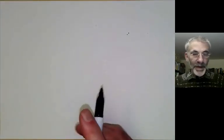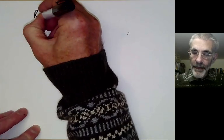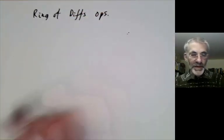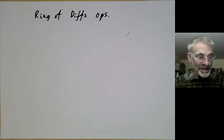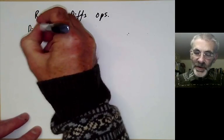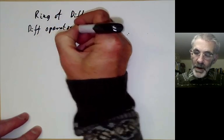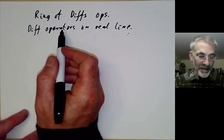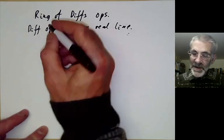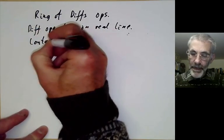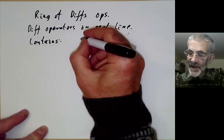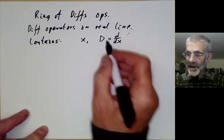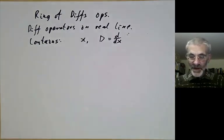The next example of a ring I want to discuss is the ring of differential operators. There are lots of variations. I'm going to do one of the simplest examples - differential operators on the real line with polynomial coefficients. This ring contains two obvious elements: x and the differential operator D. I'm not going to write it as d/dx for a reason that will become obvious in a moment.